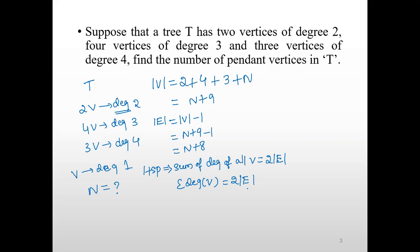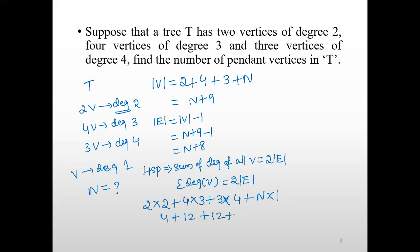The edge count is n plus 8. The sum of the degrees of all vertices is: 2 vertices of degree 2, plus 4 vertices of degree 3, plus 3 vertices of degree 4, plus n pendant vertices of degree 1. This gives us 2×2 + 4×3 + 3×4 + n×1, which equals 4 + 12 + 12 + n.